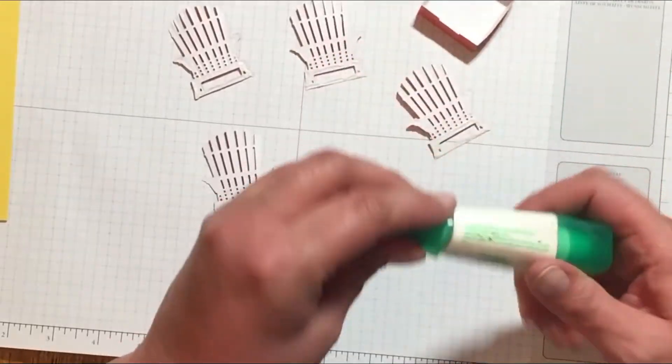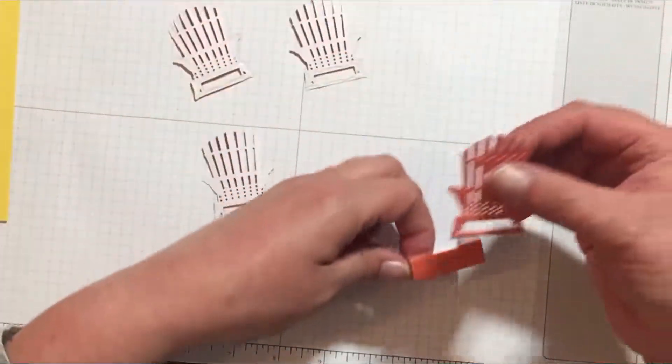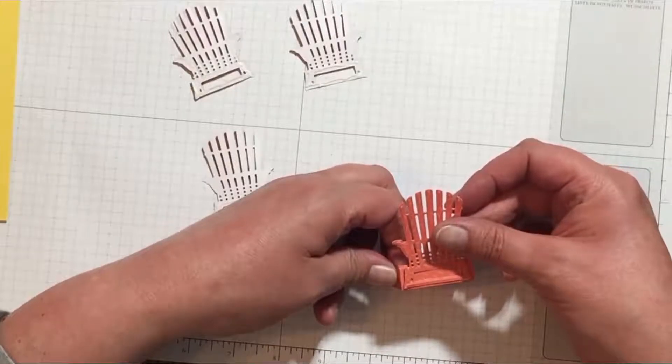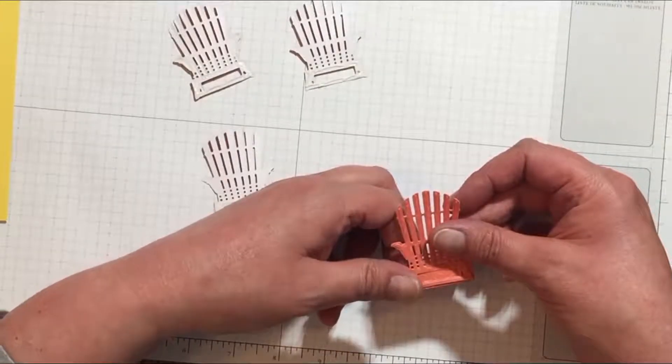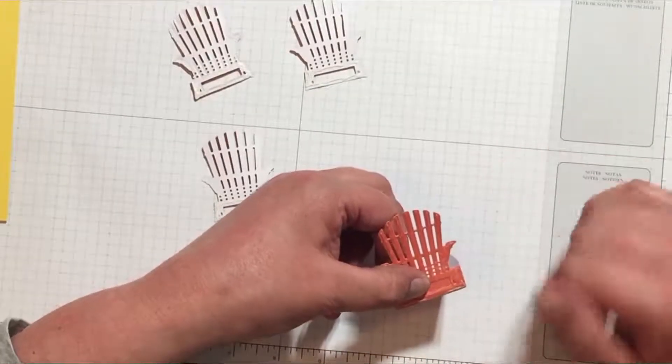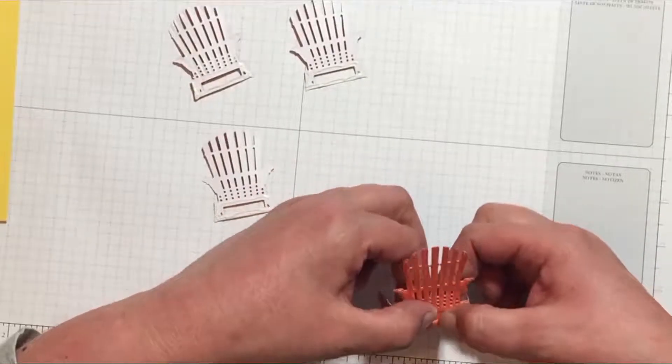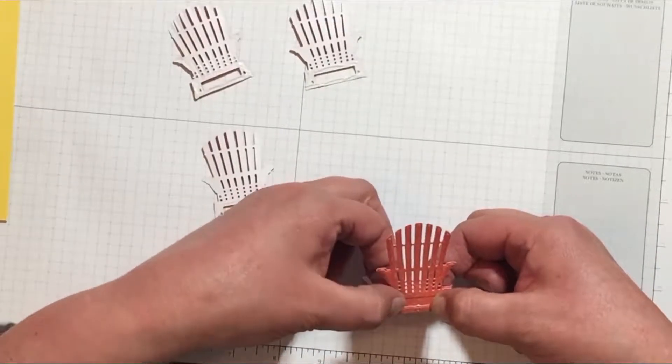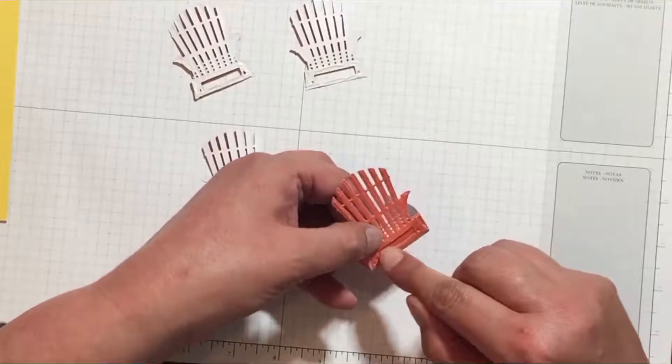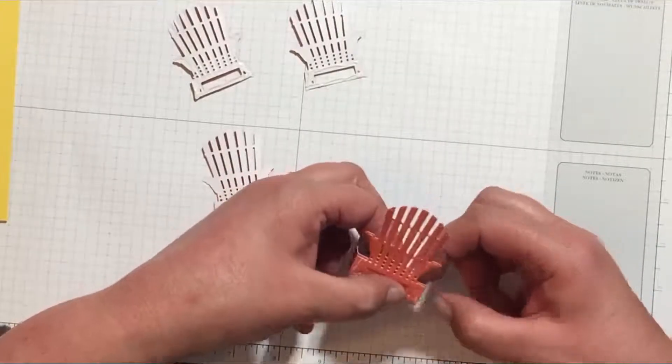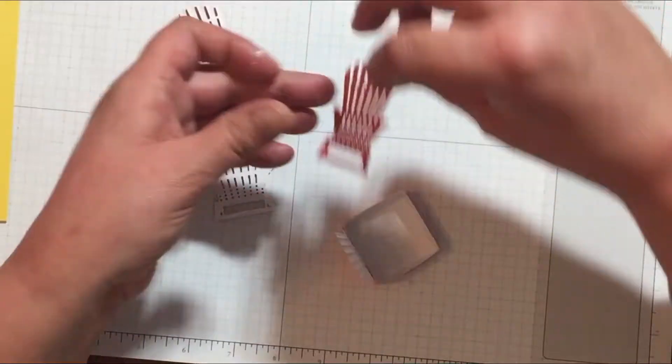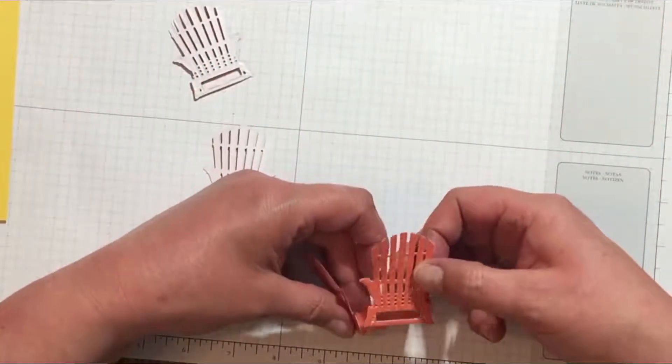Once you've got glue on all four of your chair pieces, just go ahead and put your glue away and then attach one chair piece to each side of the box. Align the base of the chair with the bottom line of that box piece and then press and hold for just a moment to give the Tombow glue a chance to really grip onto the box.